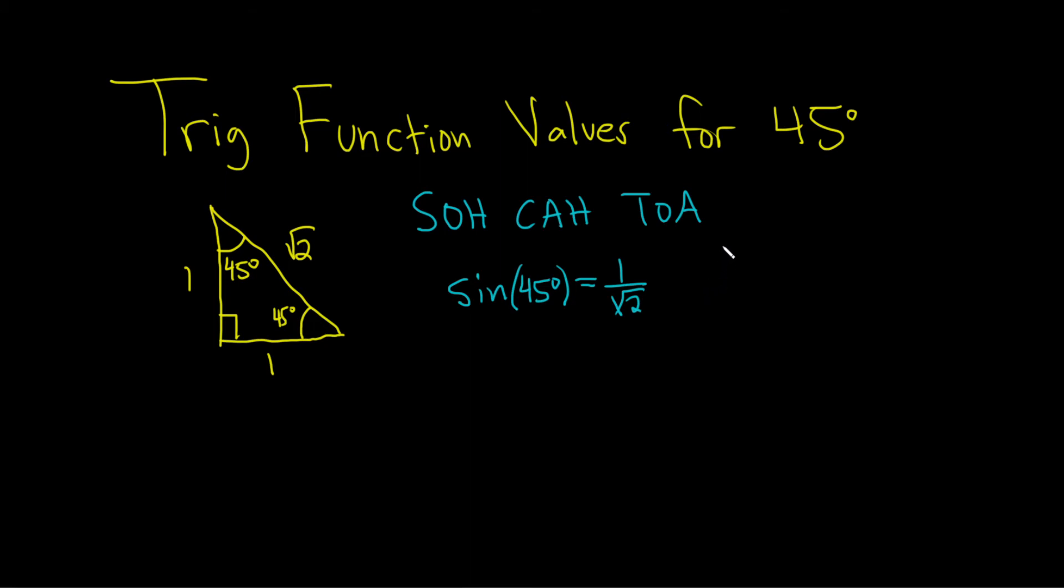The reciprocal function of sine is cosecant. So cosecant of 45 degrees means we flip this to get the square root of 2.